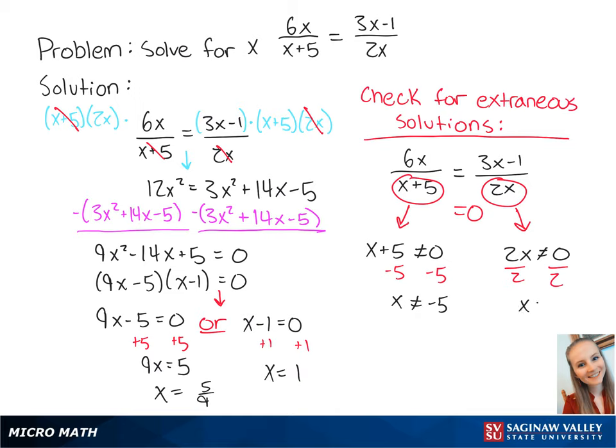Since neither of our solutions are negative 5 or 0, x equals 5 over 9 and x equals 1 are the final answers.